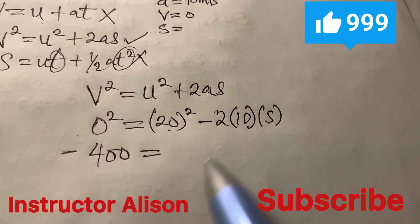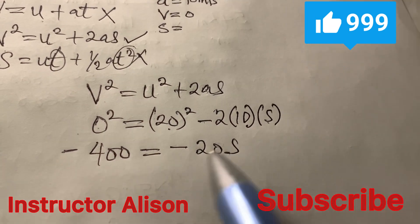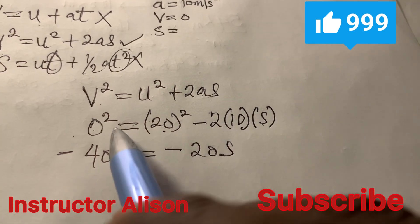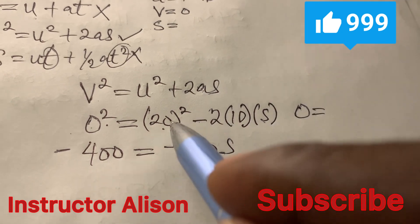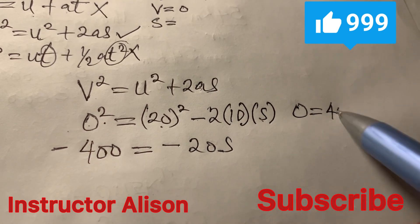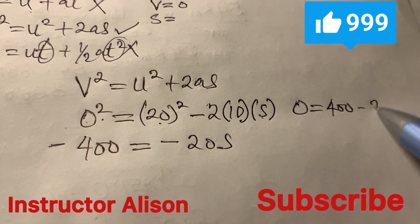If you don't understand what happened here, remember 0 squared is 0 equal to this 20 squared is 400 minus 2 times 10 is 20 times S, that is the distance. So if you pull this 400 across, if it crosses the sign of equality it becomes negative 400 equal to negative of 20 S.